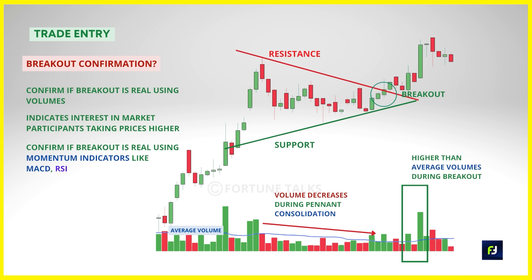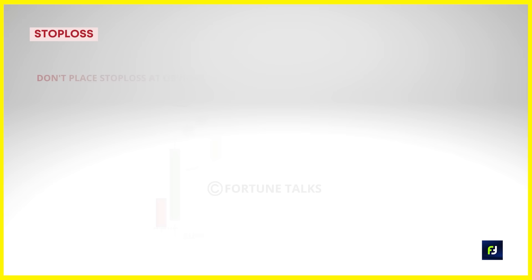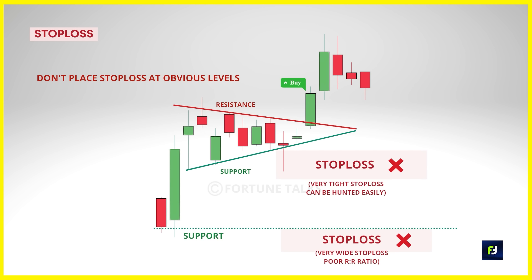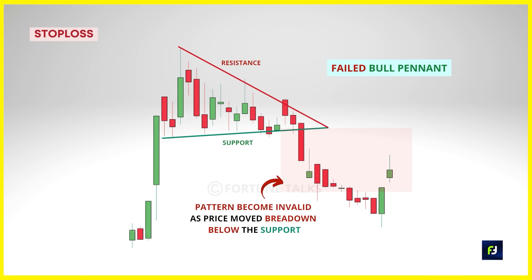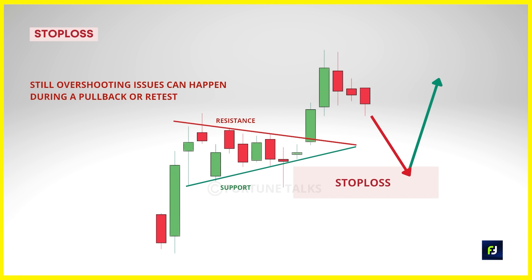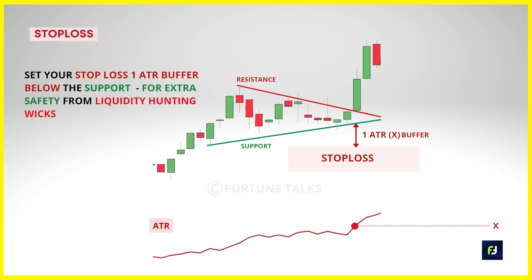For stop loss when trading the bull pennant: don't set it at obvious levels because smart money can easily hit those. Your stop loss should be at a level that, if crossed, invalidates your trading setup. The bull pennant is deemed invalid when the price breaks and closes below the bottom trend line support, so keep the stop loss below that trend line support or below the swing low level. Due to potential overshooting issues and long wicks, give your trades more breathing space by setting the stop loss some distance from the pennant structure using the ATR indicator — specifically, one ATR below the swing low level.